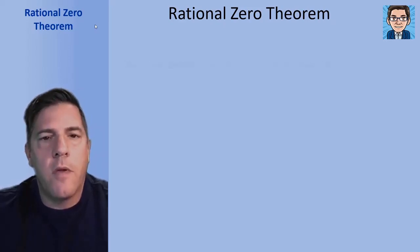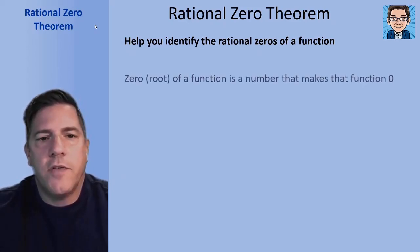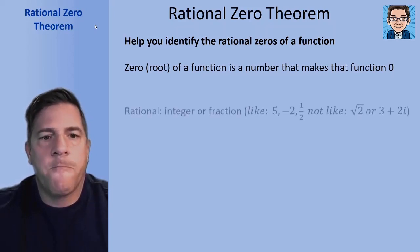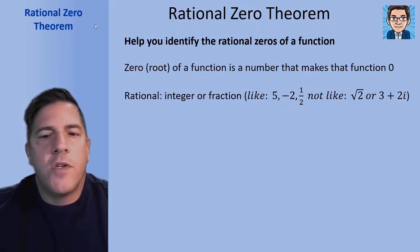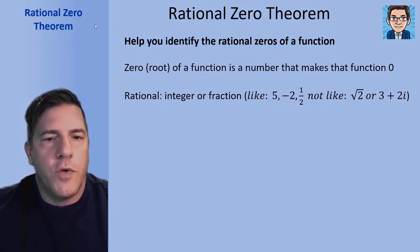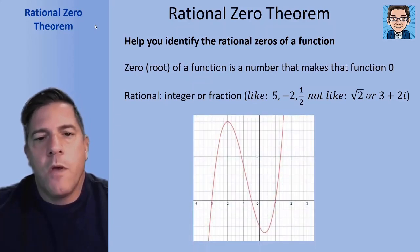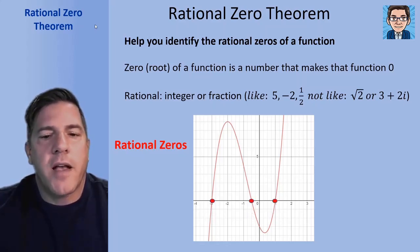So let's take a look at the Rational Zero Theorem. This is going to be used to help you identify the rational zeros of a function. A zero or a root of a function is a number that makes that function zero. Rational refers to an integer or a fraction — so we're talking about zeros like 5, negative 2, and one half, not things like the square root of 2 or 3 plus 2i, which are examples of roots that are not rational. The rational zeros are also going to be where the function crosses the x-axis.